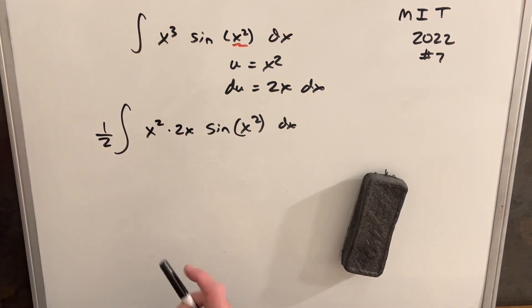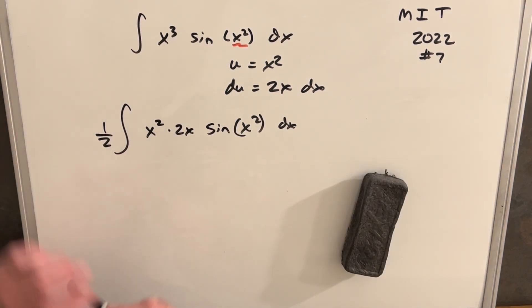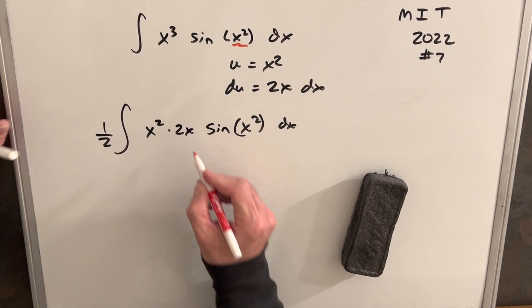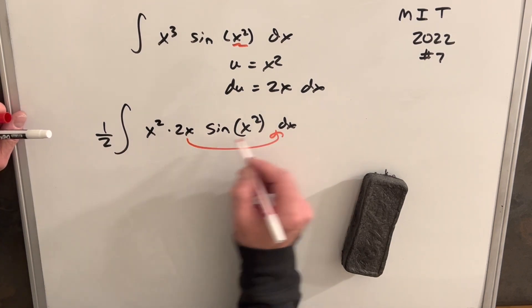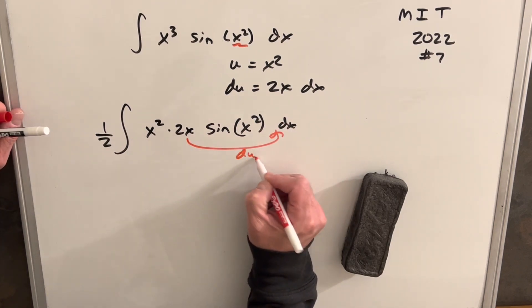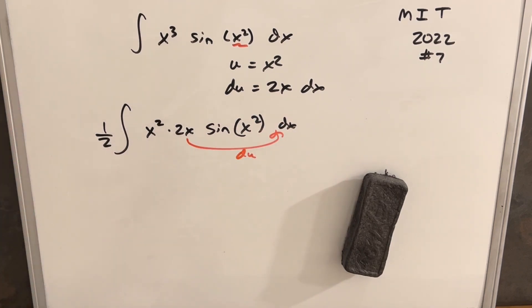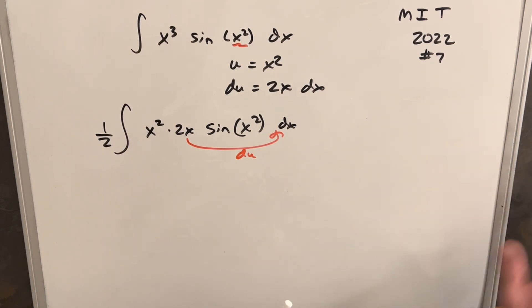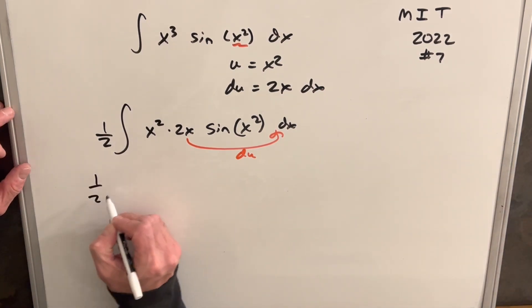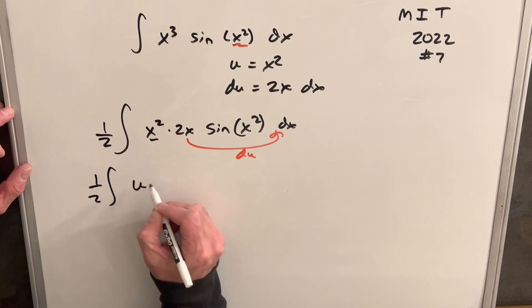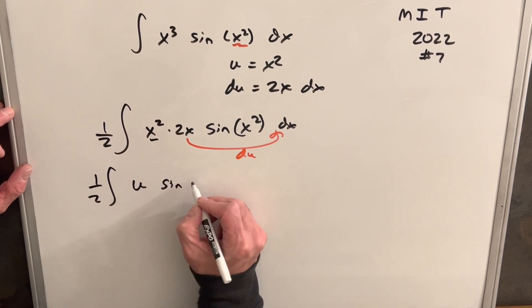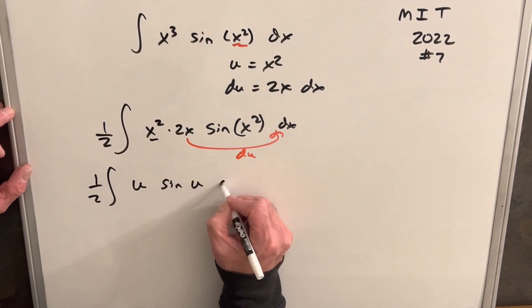Now we have a u substitution for our x squared terms. The 2x together with dx is actually our du. So we can rewrite this entire integral in terms of u. We're going to have one half times u times sine of u du.